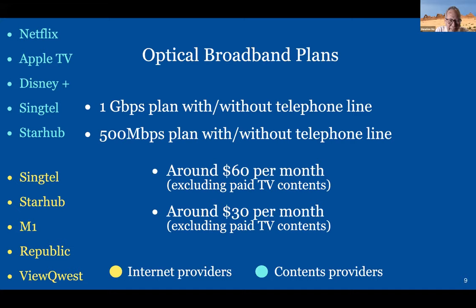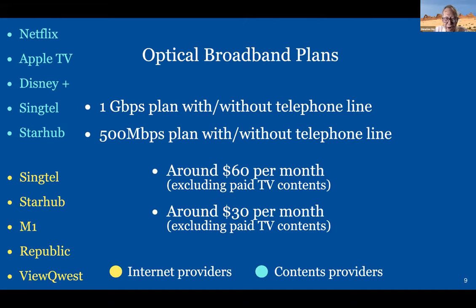Are you aware that there are two plans in the Singapore market? One is the 1GP plan and the other is the 500M plan. The 1GP costs about $60 a month; the 500M costs about $30 a month. Most retired seniors — I would say the 500M is more than enough. Unless you have many children at home using the internet at the same time, then you may need the 1GP. But for husband and wife or one or two children at home, 500 is more than enough.